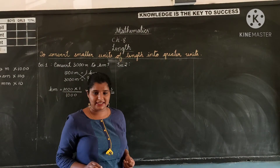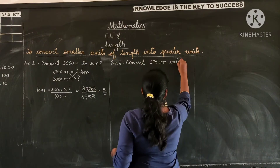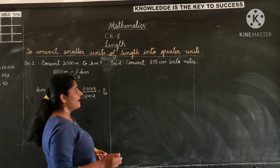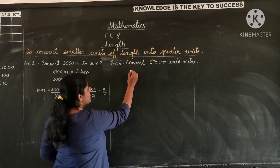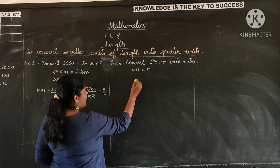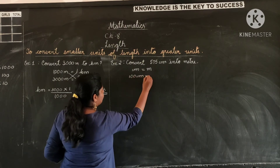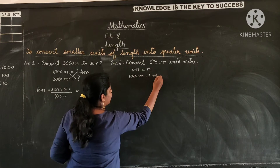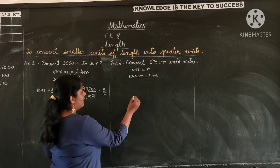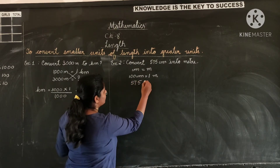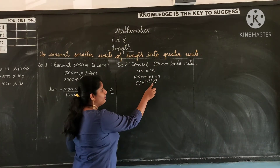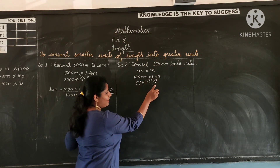Example 2: convert 575 centimeters into meters. First, write the relationship between centimeters and meters. We know that 100 centimeters make 1 meter. Now, 575 centimeters make how many meters? Cross-multiply — the number with the question mark becomes the denominator.